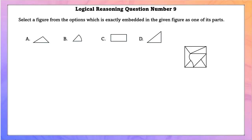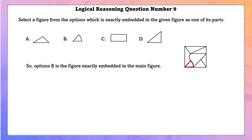Logical reasoning question number 9. Select a figure from the options which is exactly embedded in the given figure as one of its parts. Option B is embedded in the figure as one of its parts.